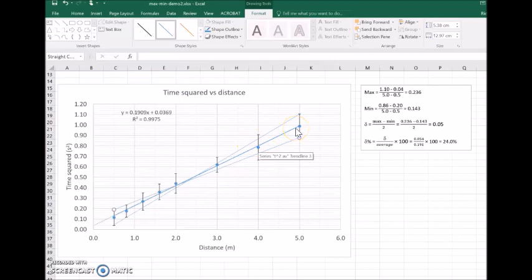That's the original equation for the line of best fit. To calculate the uncertainty delta, it's just maximum minus minimum over two. So the maximum gradient was 0.236 minus the minimum 0.143, divided by 2, and I get 0.05. So that's the delta value or the absolute uncertainty.